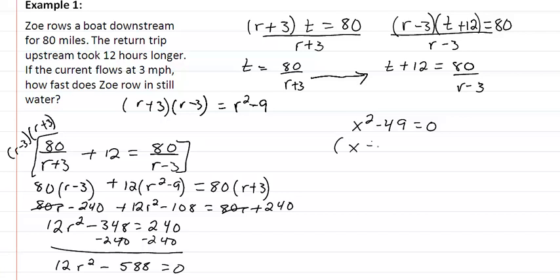You should recognize this as a difference of squares. We would get r minus 7, r plus 7 equal to 0. r plus 7 will give us a negative rate so we don't want that. So we get r equals 7 miles per hour. That is how fast Zoe is going in still water.